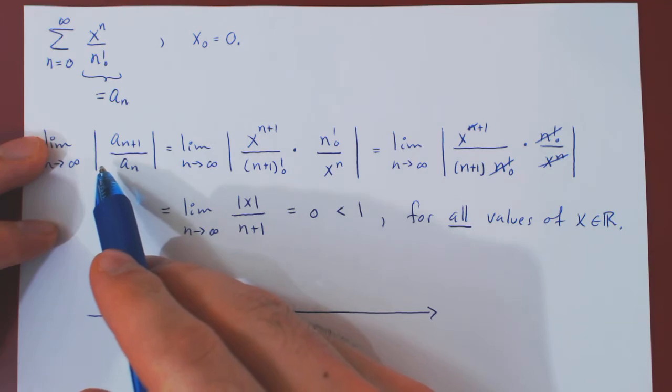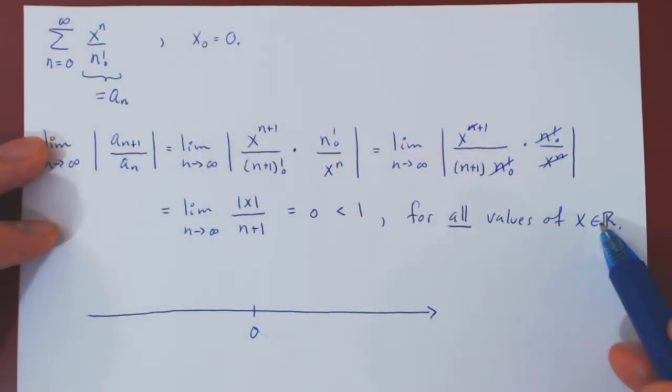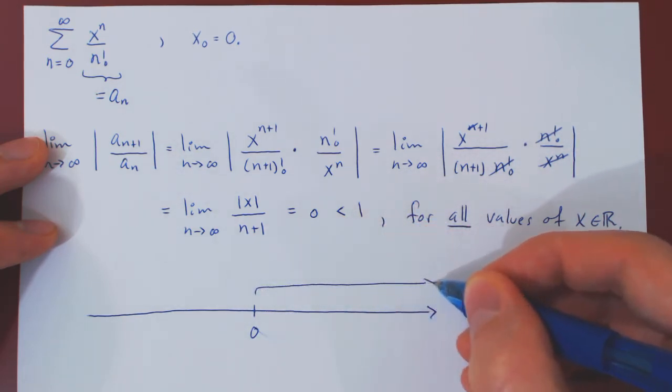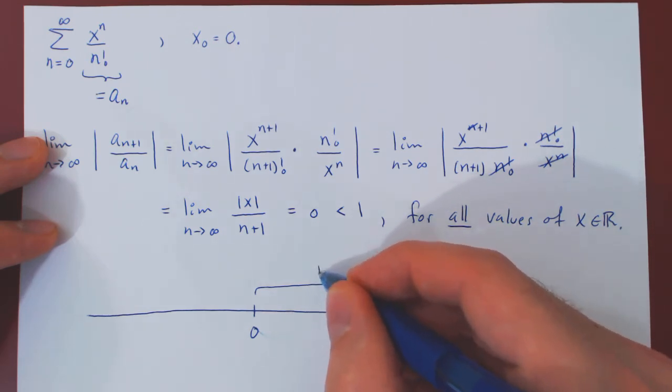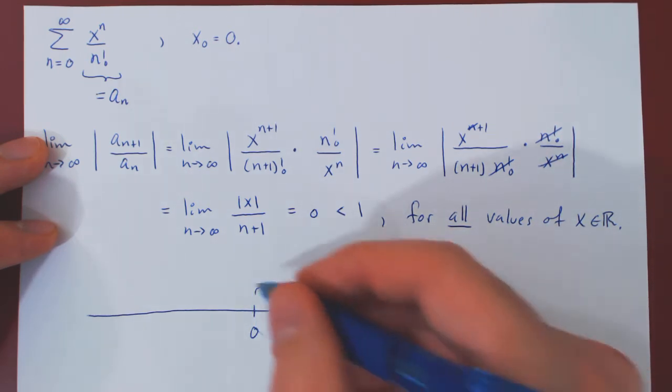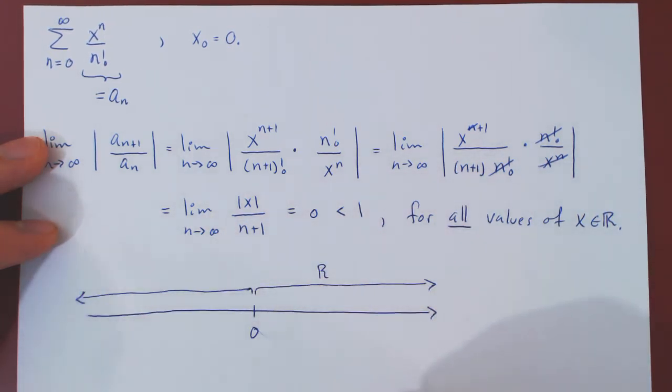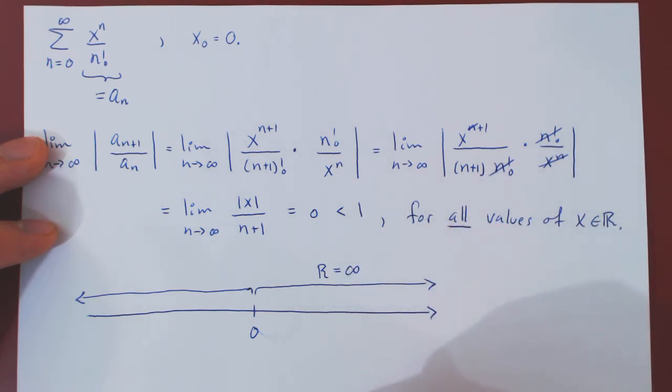As the series converges for all values of x, we can walk as far as we want in both directions, and we will always have convergence. So, since we can walk away as far as we want in either direction and always have convergence, the radius of convergence is infinity.